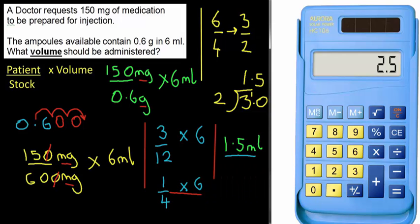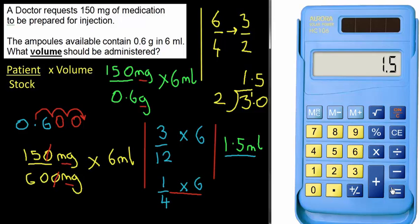Checking with the calculator for the last time: using the adjusted formula once the units are taken care of — 150 divided by 600, times 6 — the answer comes out to be 1.5 millilitres.